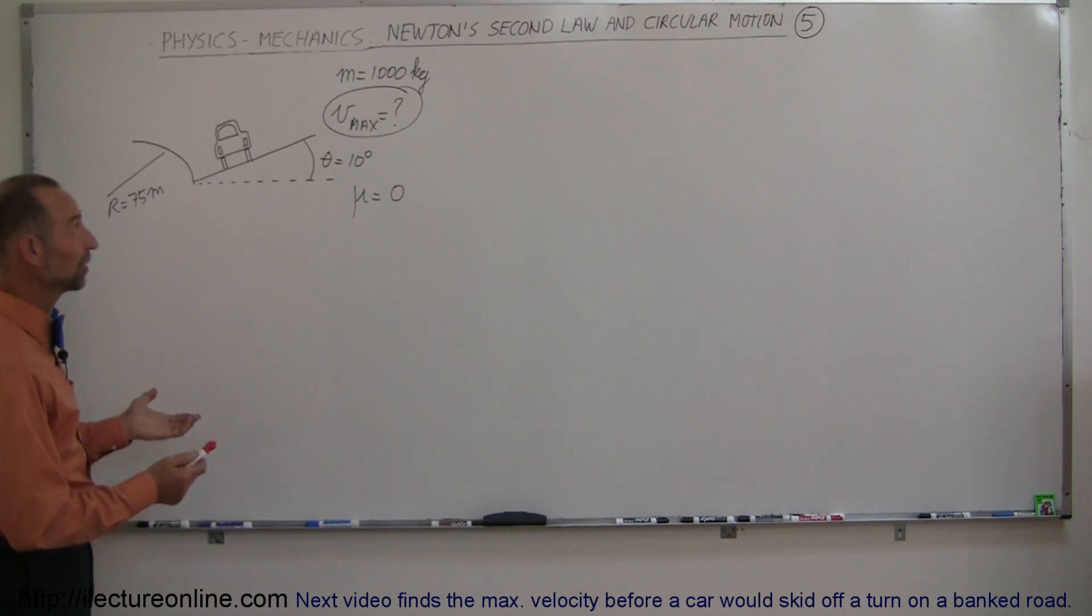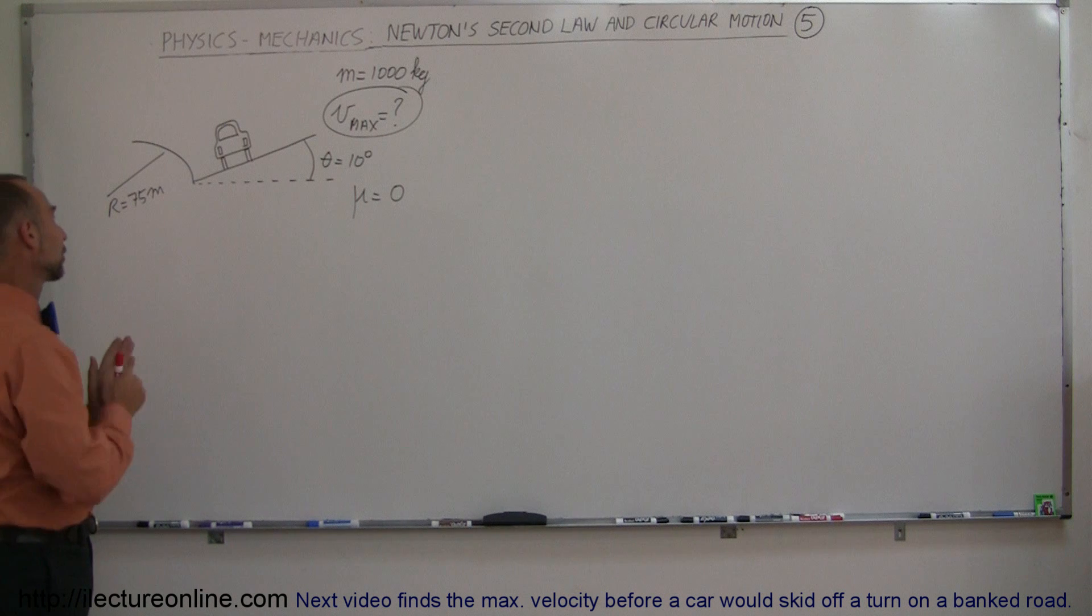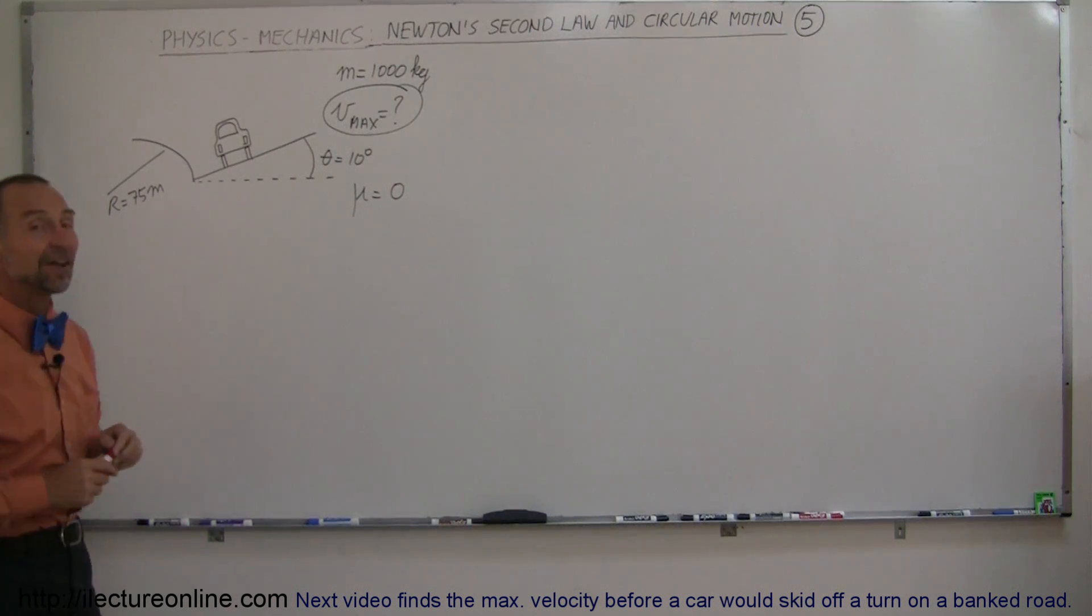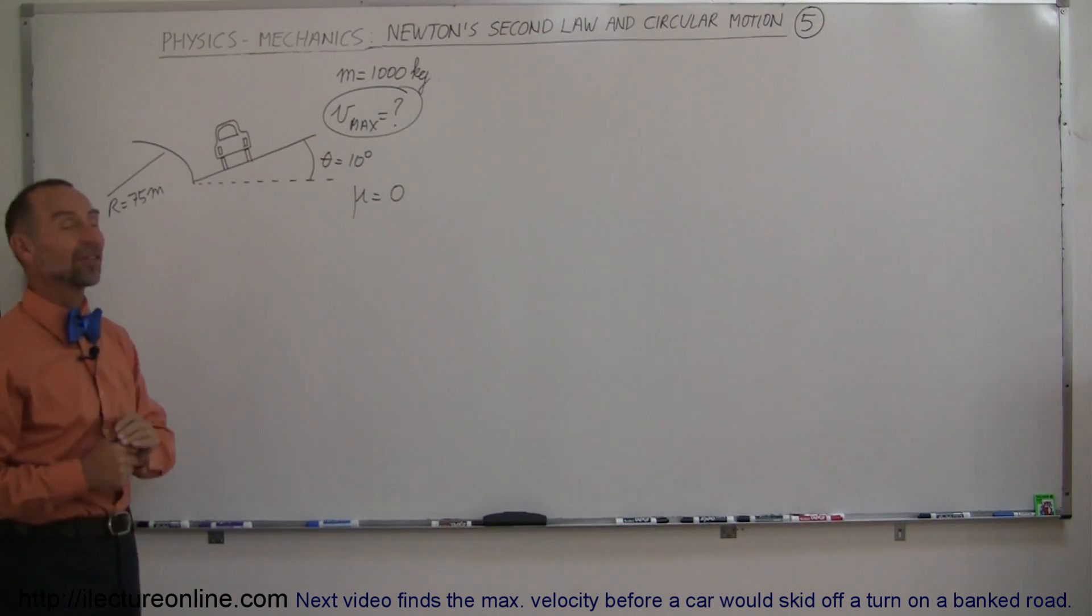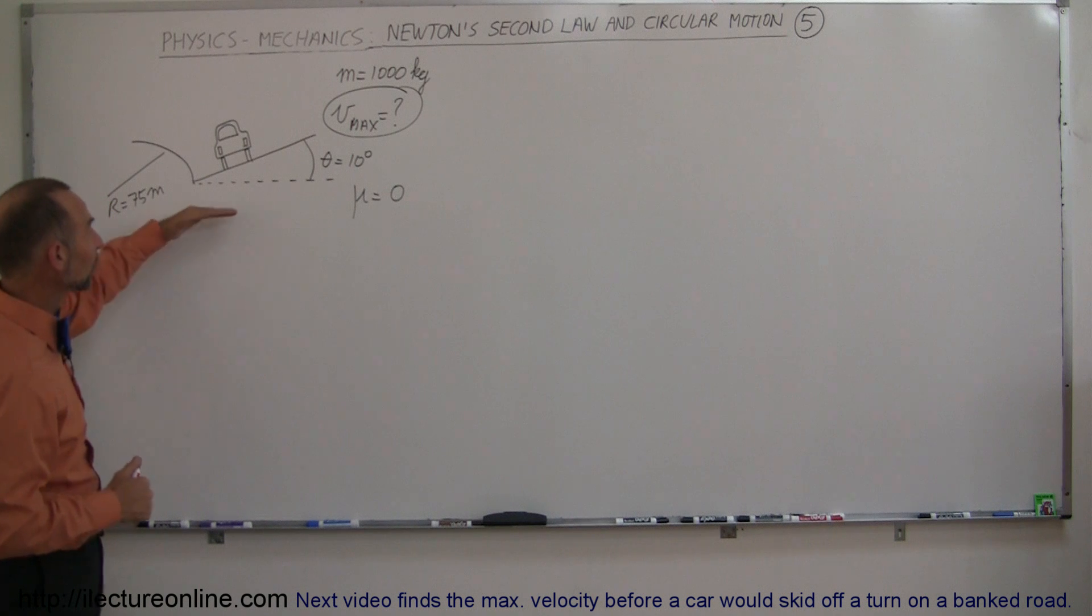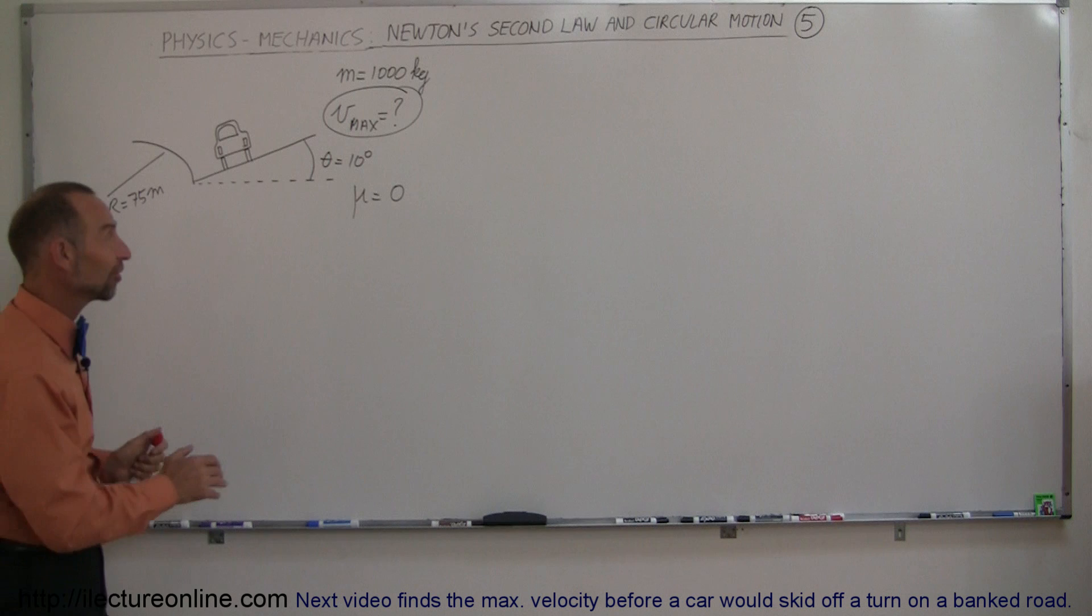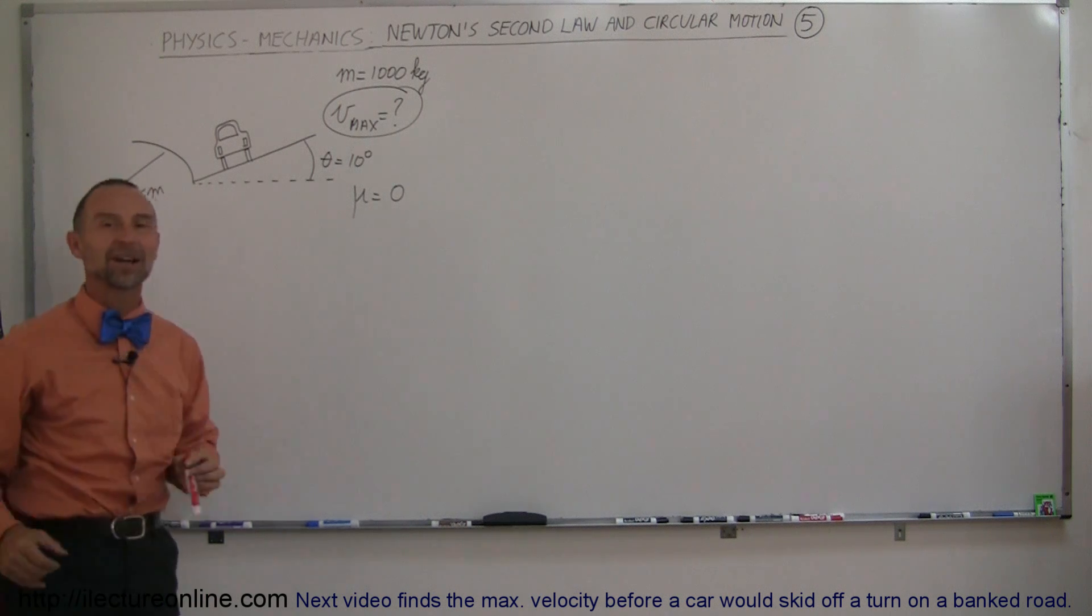Here's our next example of circular motion and Newton's second law. Here we have a car driving around a curved road, radius is still 75 meters, the car still has a mass of a thousand kilograms, but in this case the road is banked at an angle of 10 degrees, and to make things very interesting, there's no friction between the tires and the road.